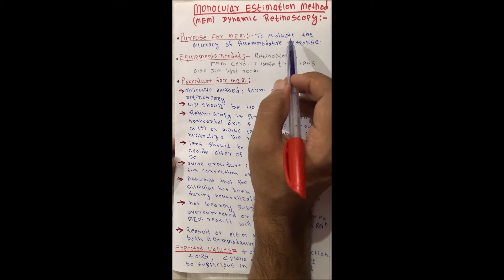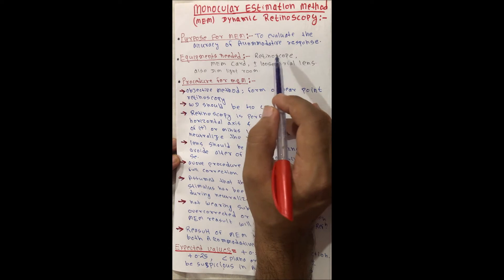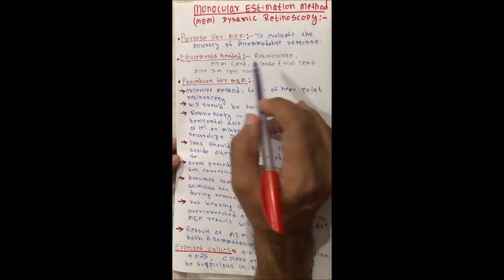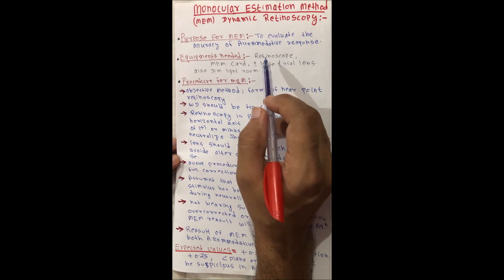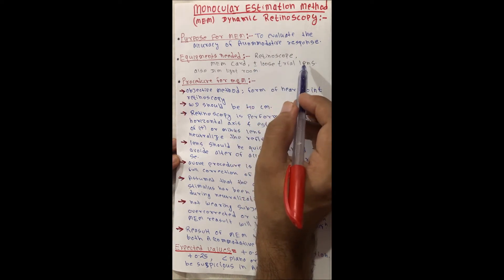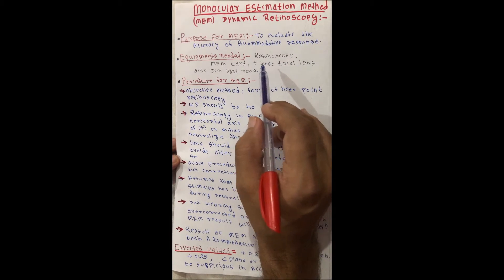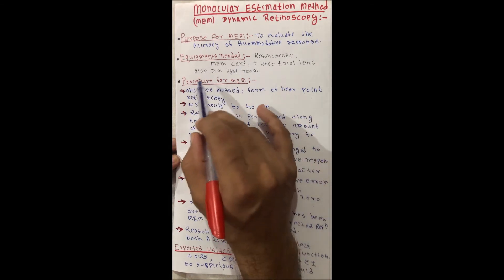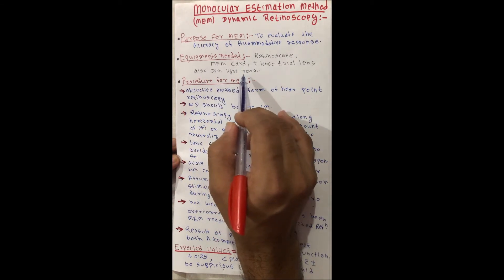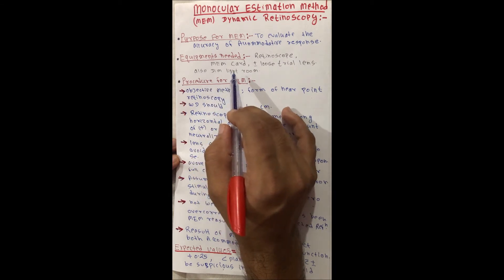Equipment needed is a retinoscope, which is used for retinoscopy, and MEM card, which is attached in front of the retinoscope, and plus minus loose trial lens for checking of lead or lag of accommodation. Also, a dim room light is needed for conducting this procedure.